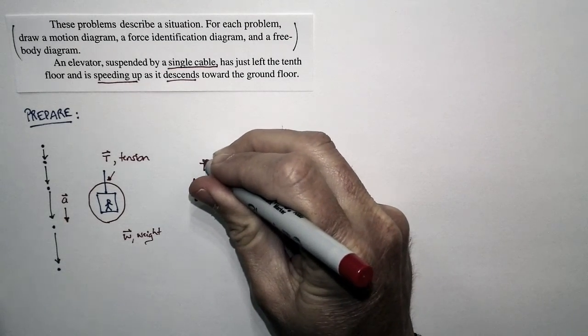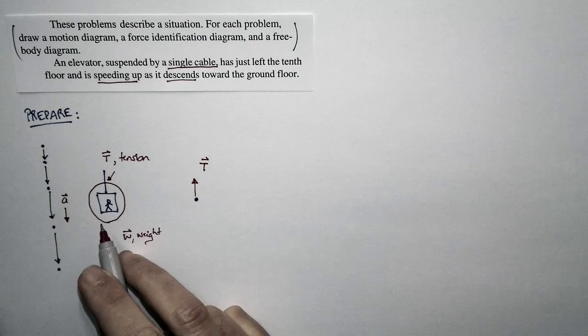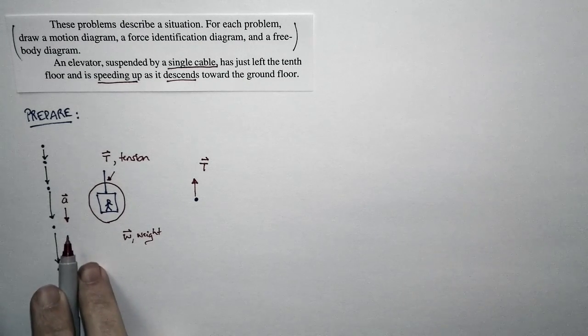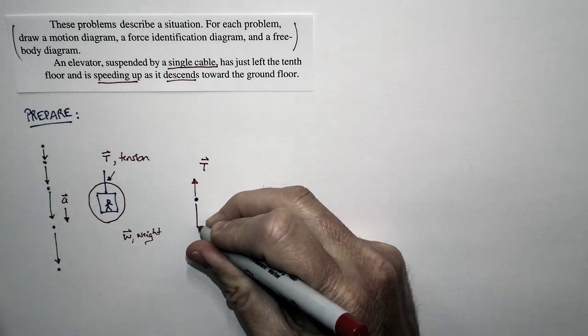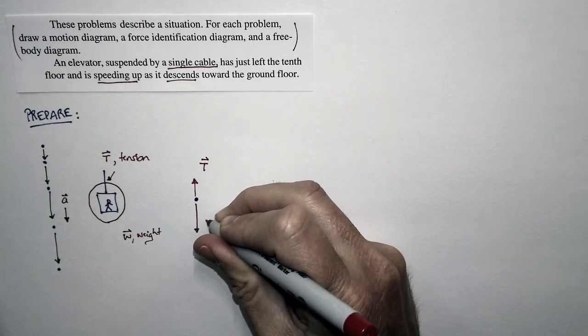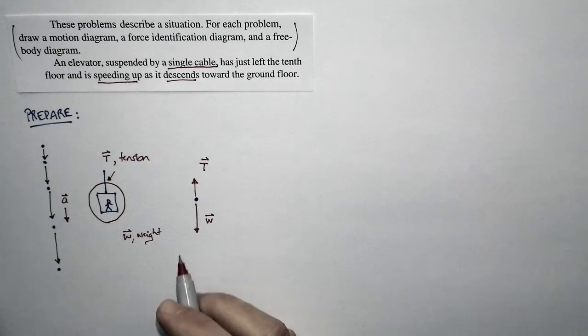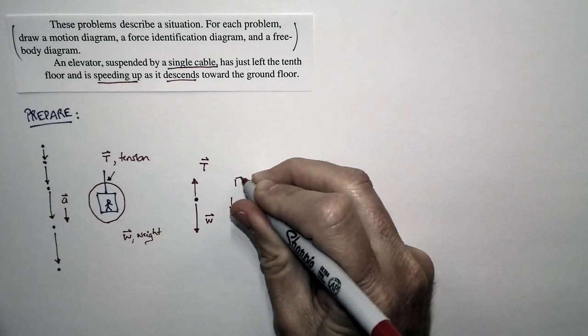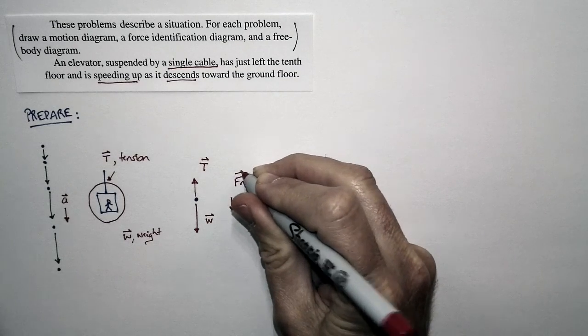Now the tension force is directed upward. The weight force is directed downward. I know the acceleration is downward, and so the net force must be directed downward. And so that tells me I want to make the weight force be bigger than the tension force so that the net force can be directed downward.